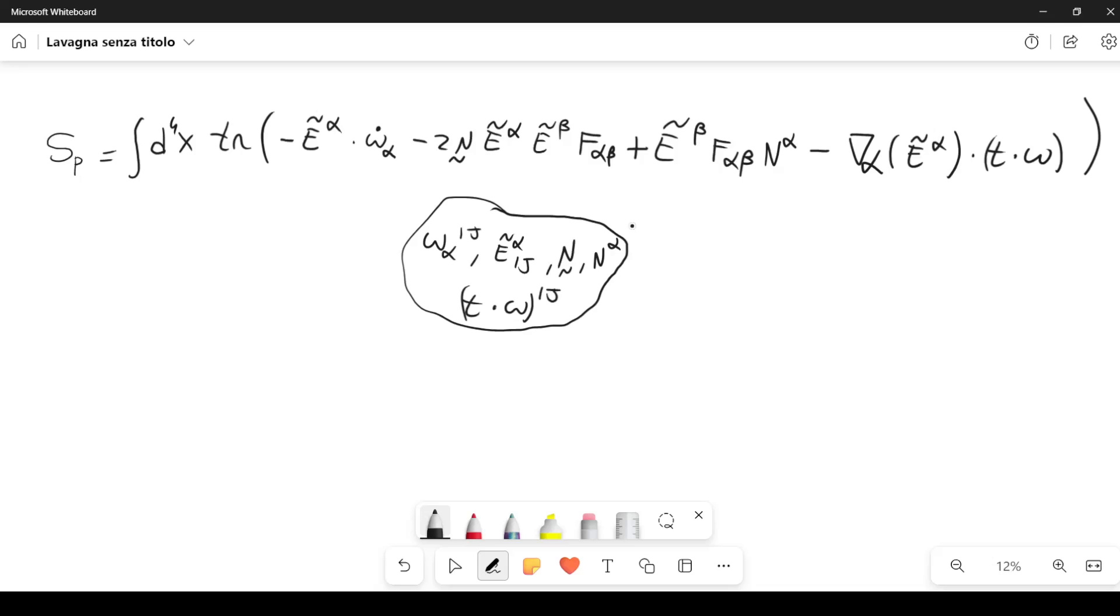In particular, when you have an action, you can take the variation of the action with respect to the variables and you derive some equations of motion and some constraints. In particular, what I want to consider now is the variation of the action with respect to this parameter here, e tilde.